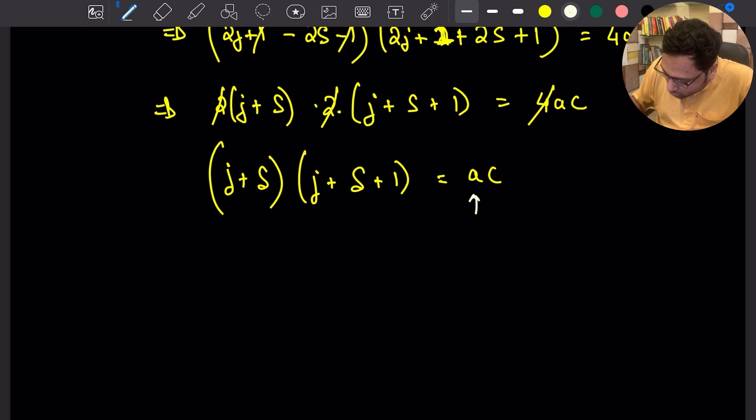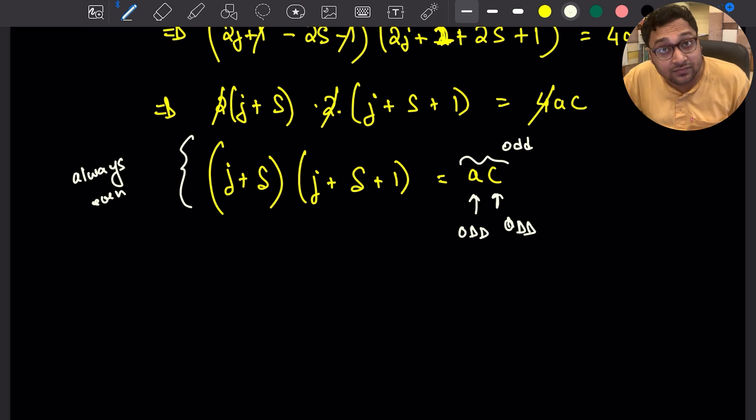What would be the issue here? Why can't this happen? There's a very simple reason. Notice that A is odd, that's given in the problem. C is odd, that's given in the problem. Therefore, their product is odd. So the right-hand side of the equation is odd. If we can show that the left-hand side is always even, then we found a contradiction. Let's see how we can do that. This is the part where we do the parity check. The right-hand side is odd. The left-hand side is even. So they cannot be equal.